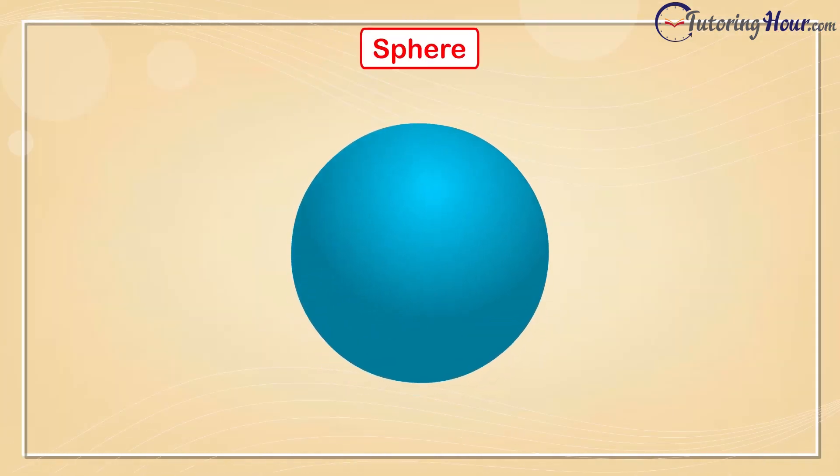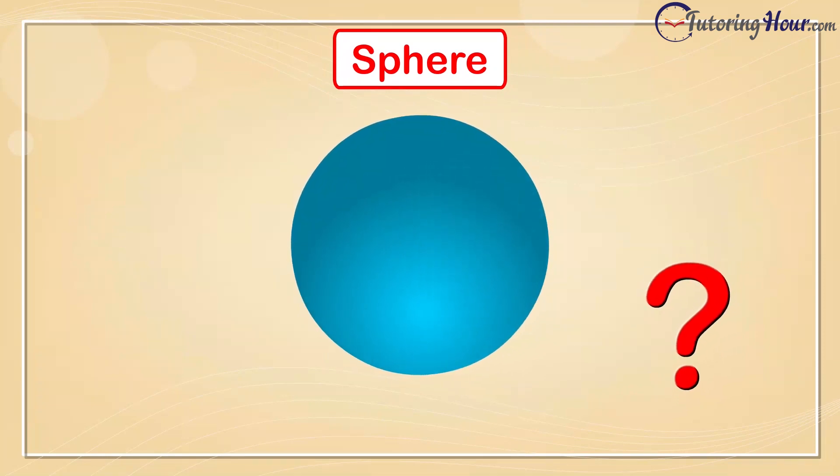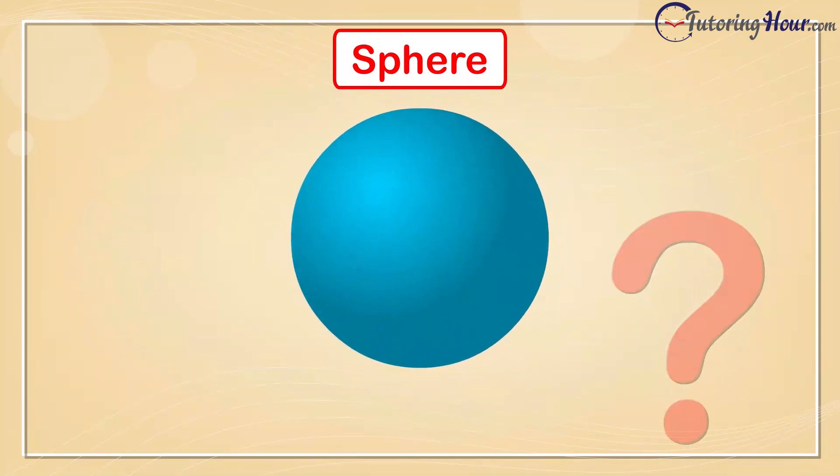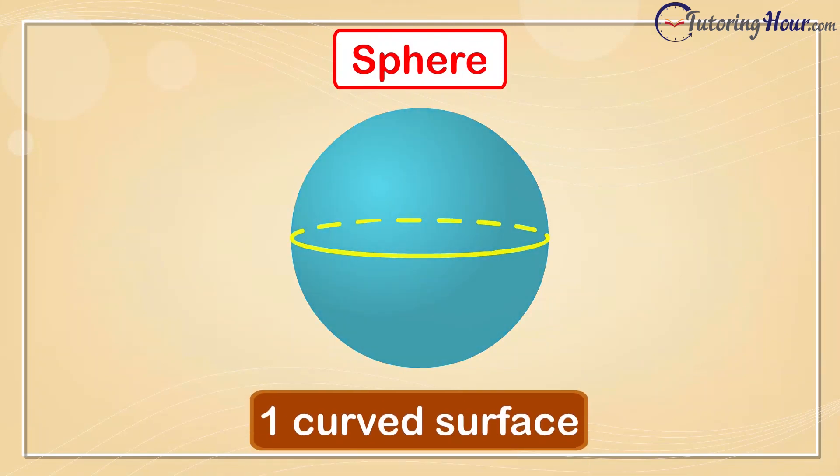Here comes our last shape, the sphere. How many edges and vertices do you see here? A sphere has no edges or vertices. It has just 1 curved surface.